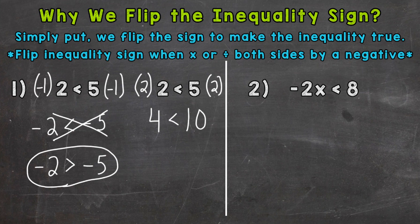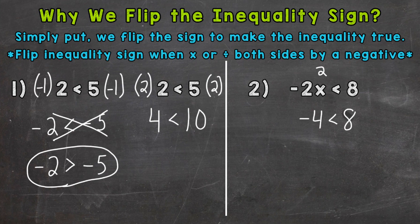So let's move on to number two, where we have a one-step inequality that we will need to divide both sides by a negative. We'll see how that impacts flipping the inequality sign and why we need to. So we have negative two times X is less than eight. We're going to start by plugging in a number that will make this inequality true — a solution. Let's plug in two for X. So negative two times two is negative four, and that's less than eight. So negative four is less than eight, which is true. Two is a solution to that inequality.